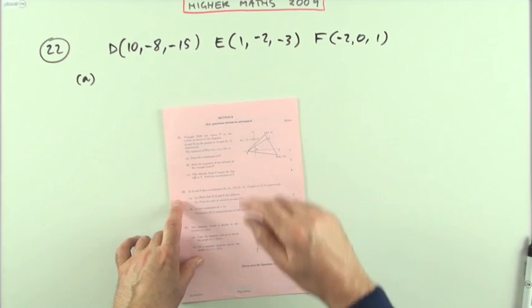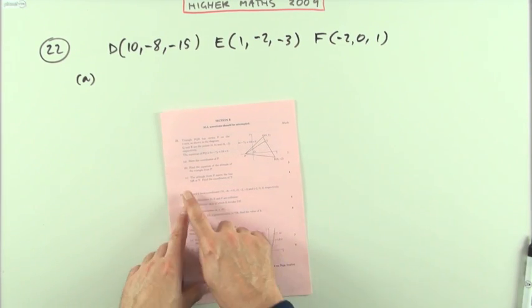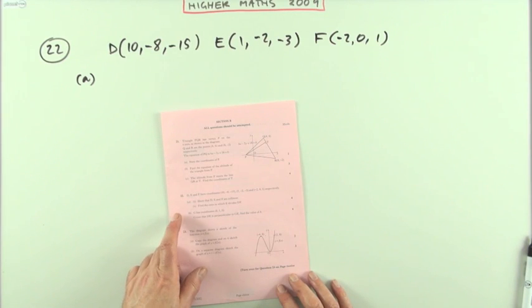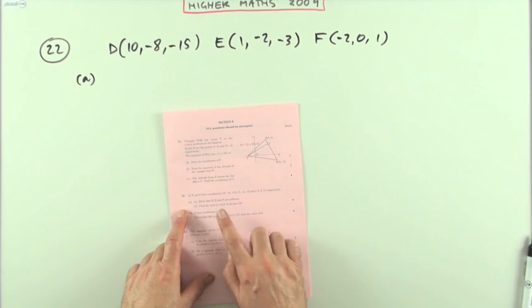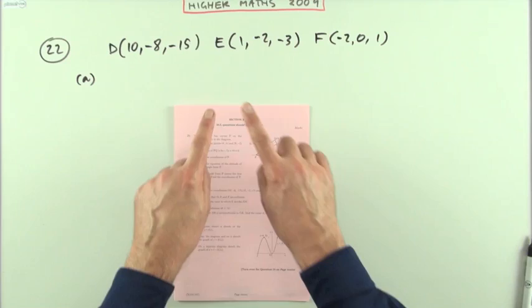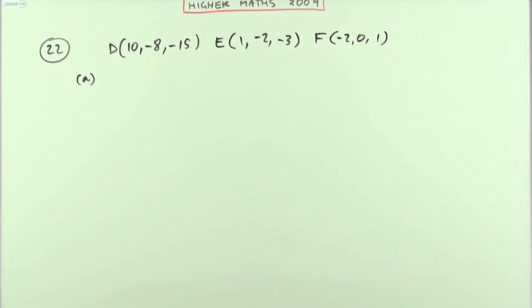Number 22 from the 2009 Advanced Higher first paper. Here we've got three points in three-dimensional space. Show that these three points are collinear and show the ratio in which E divides DF.